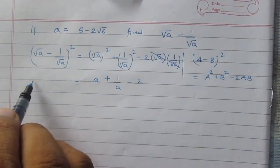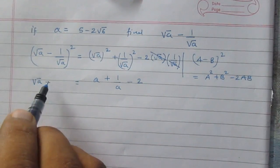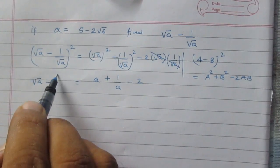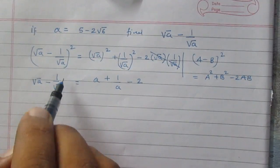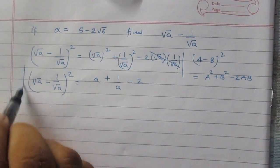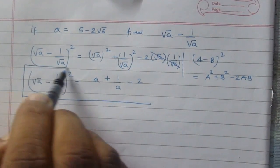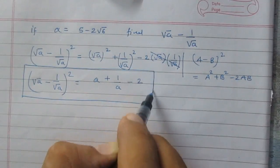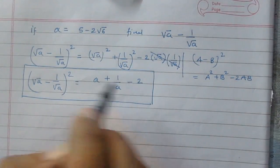So in this way, we have found that the square of square root a minus 1 upon square root a is equal to a plus 1 upon a minus 2.